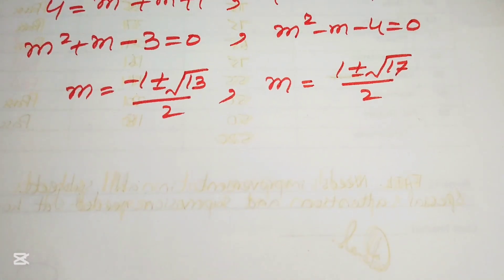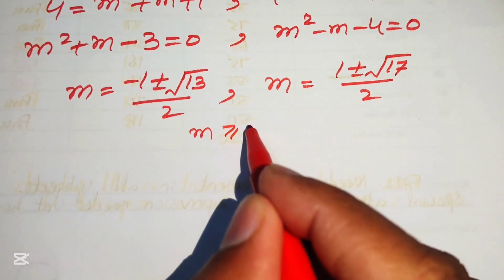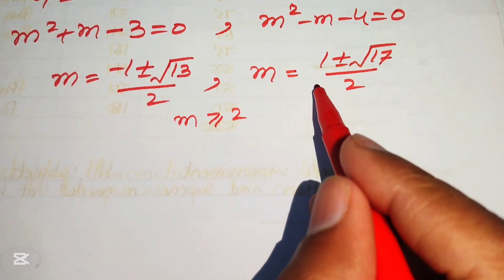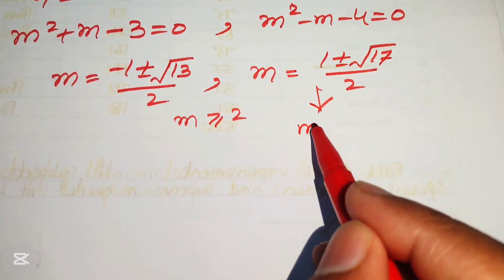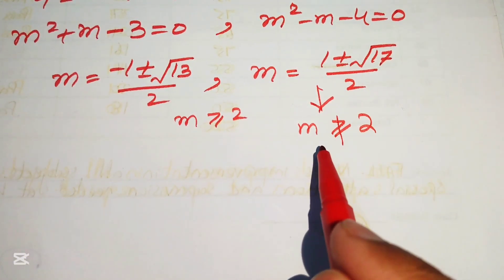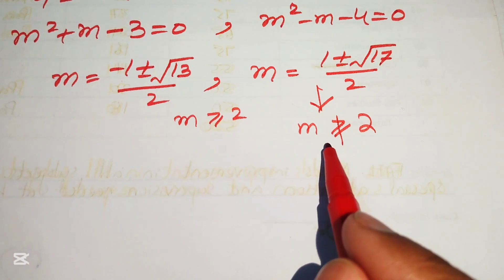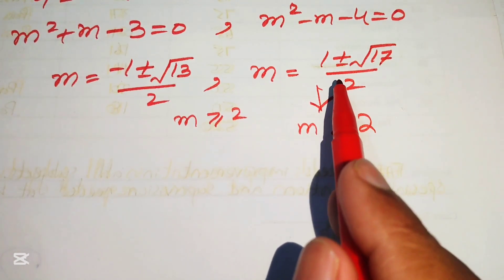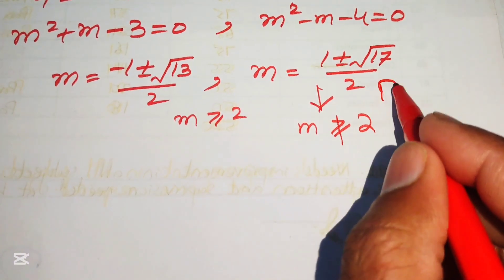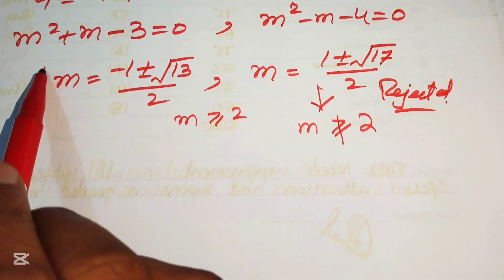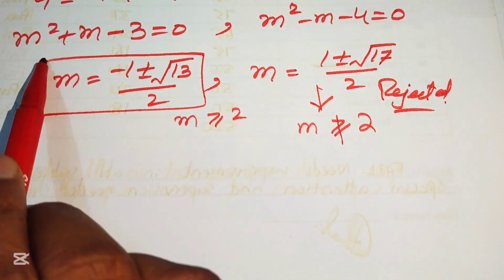Applying the given condition m ≥ 2: the solutions from Case 1, m = (-1 ± √13) / 2, do not satisfy m ≥ 2 in decimal form. These solutions are rejected. Only the solutions from Case 2, m = (1 ± √17) / 2, satisfy the constraint and are valid.